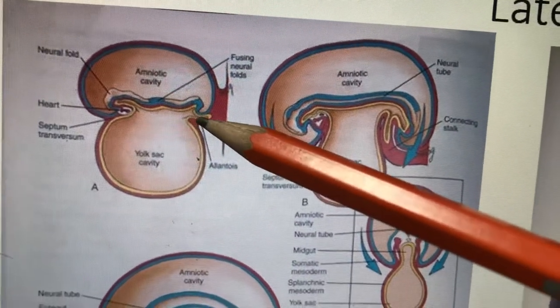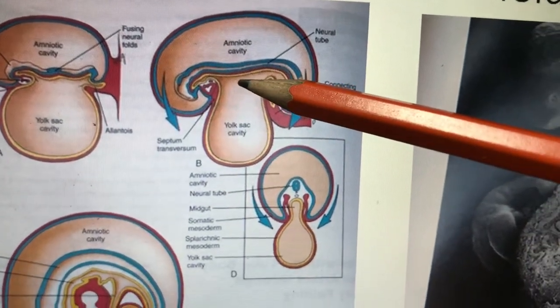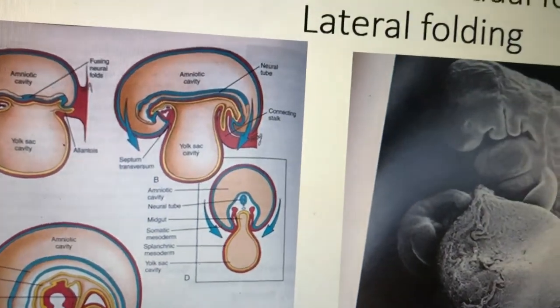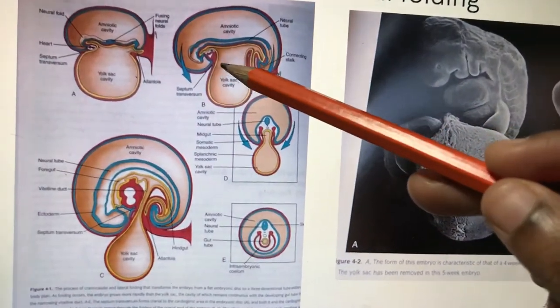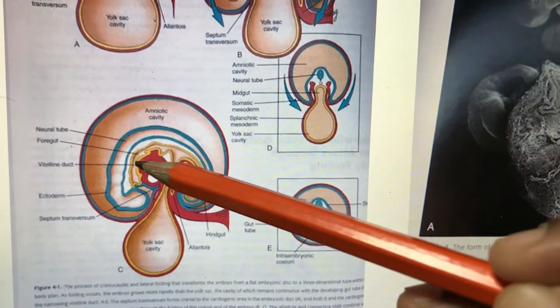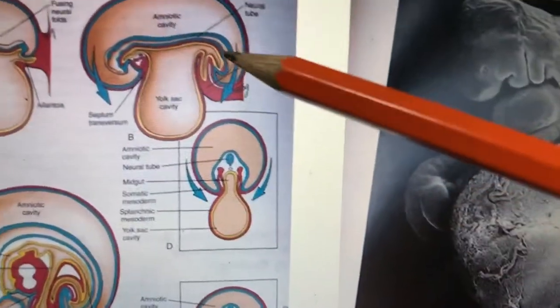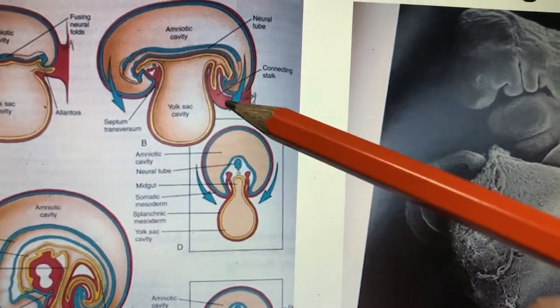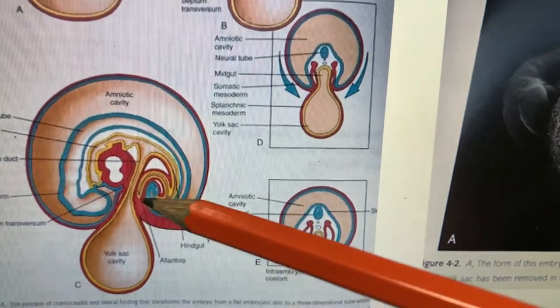The amniotic cavity becomes enlarged and comes down on both sides. The connecting stalk is here with the yolk sac cavity. The cranio-caudal folding occurs because of the development of the vertebral column. Not only cranio-caudal folding, but lateral folding also occurs — the embryo folds on both sides to become a cylindrical structure. Lateral folding constricts and narrows down the yolk sac cavity; only the connection that exists is called the vitelline duct.